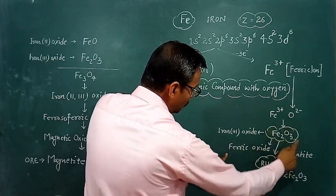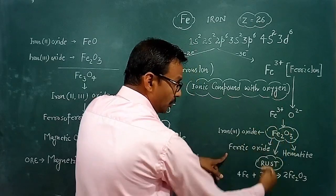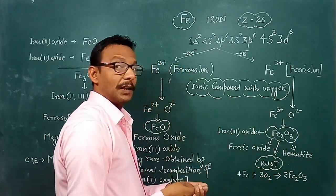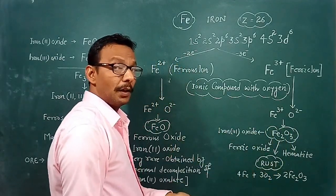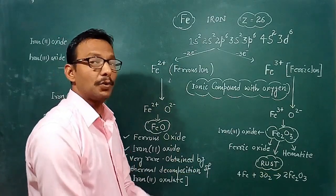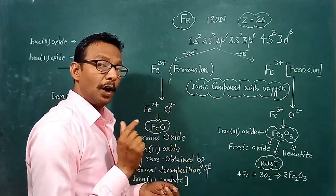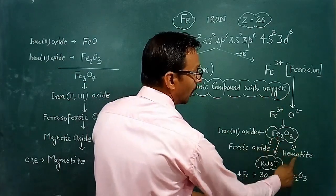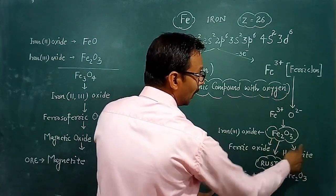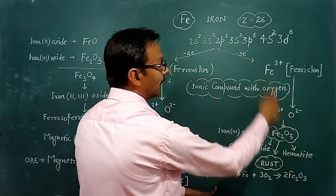Fe2O3 is found in the earth's crust in ore form and in mineral form. It occurs naturally as the ore hematite. Hematite is an important ore of iron.